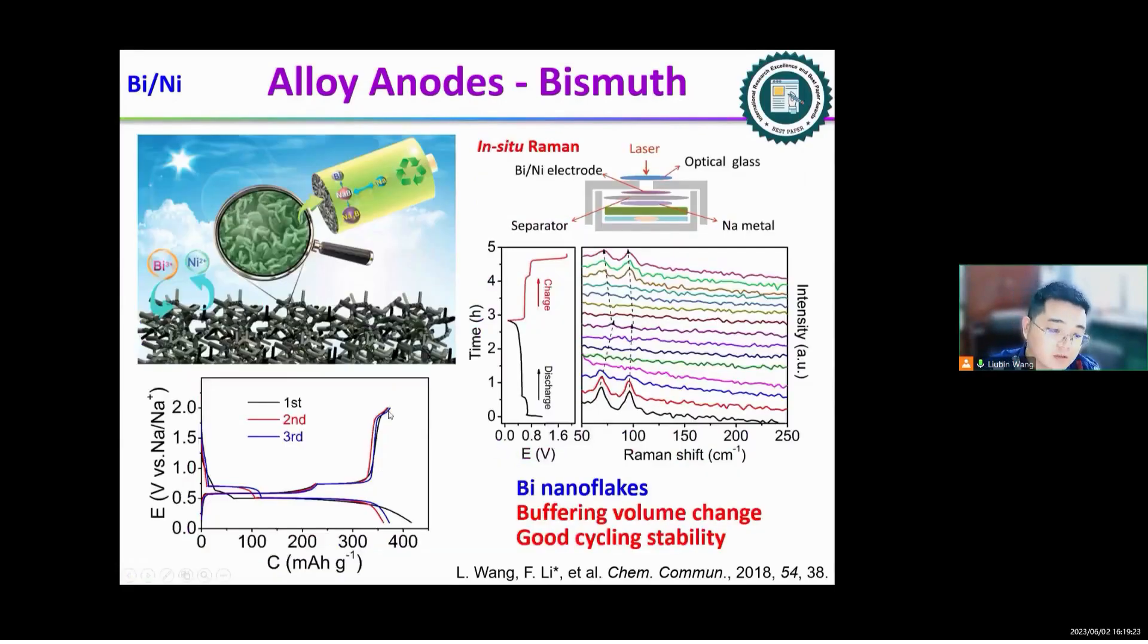When the bismuth is used as anode in the sodium ion battery, it exhibited two plateaus, meaning one electron transfer and two electron transfer. Further, based on its integrated structure, where there are no binders and conductive carbon additives, we use this electrode to examine the bismuth sodium mechanism using in situ XRD.